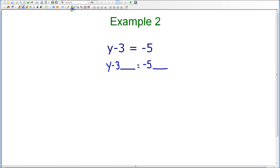Now I need to think of how am I going to get y by itself. I know that if I use opposite operations, I can get the variable by itself. The opposite of minus 3 is to add 3. So I'm going to add 3 to both sides of the equation.